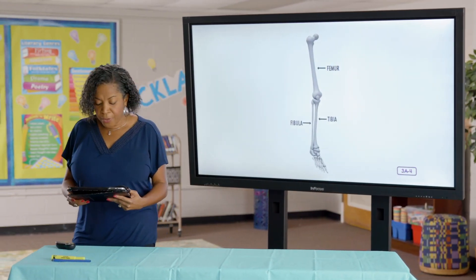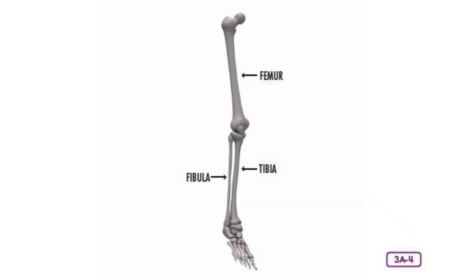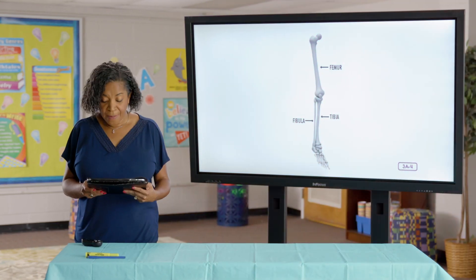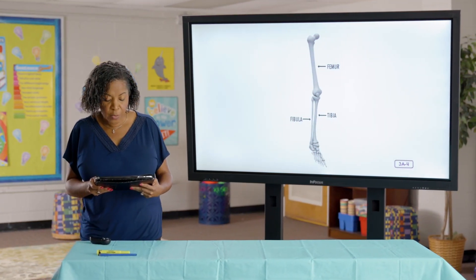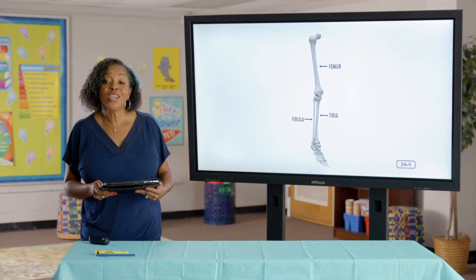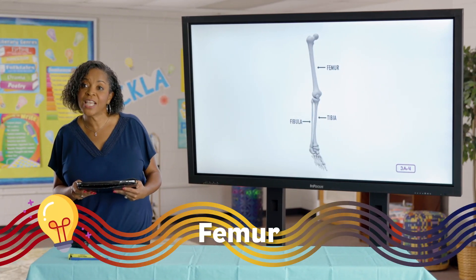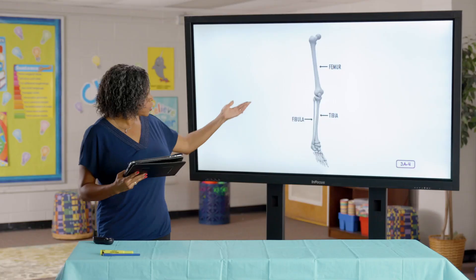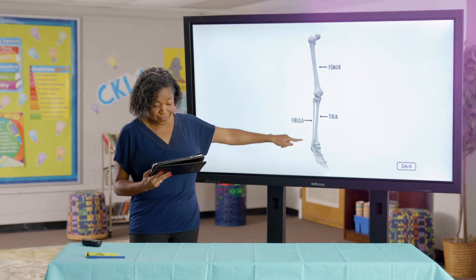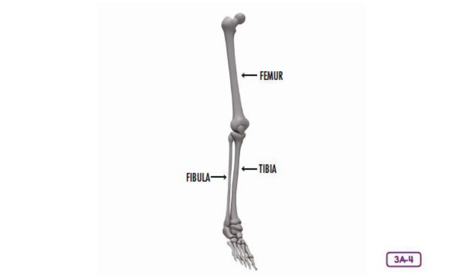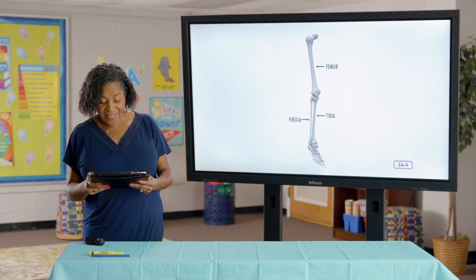Leg bones and arm bones are a lot alike, but leg bones are thicker and longer than arm bones. In fact, the longest, heaviest, and strongest bone in your entire body is in your leg. Does anyone know the name of that bone? It is your thigh bone, and it's called a femur. Your femur is connected to your pelvis and extends all the way down to your knee. In the lower part of your leg you will see two bones: the larger one in the front is called the tibia, or shin bone, and the thinner bone behind it is called the fibula. Both the tibia and the fibula connect the knee to the ankle.